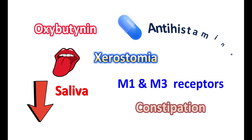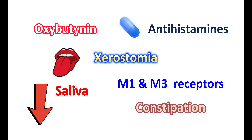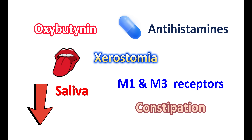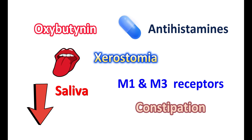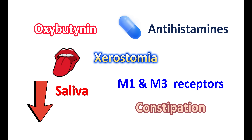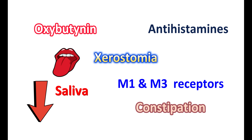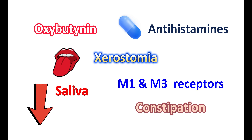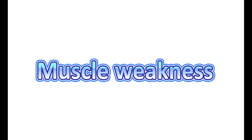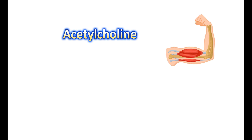The dry mouth produced by oxybutynin can be worsened by other medications like antihistamines, which are used to treat allergic conditions or relieve symptoms of rhinitis. These antihistamines also have anticholinergic actions leading to dry mouth and constipation. Therefore, taking oxybutynin along with antihistamines may result in significant xerostomia. This can also be worsened by severe dehydration or radiological procedures. If you observe significant dry mouth, you may reduce the dose and choose sugarless gums or candies to minimize xerostomia.